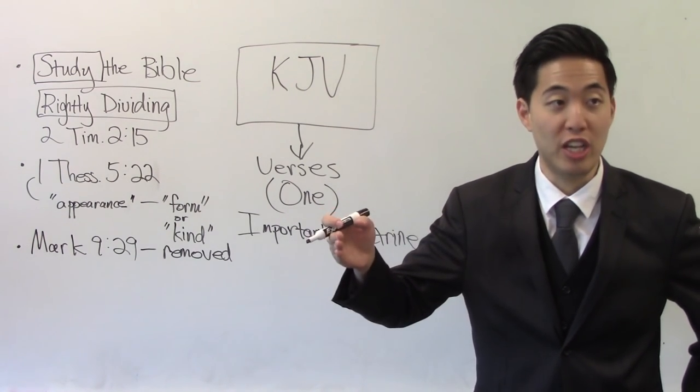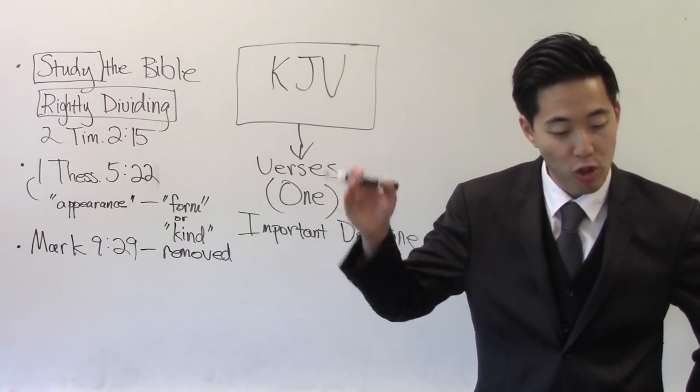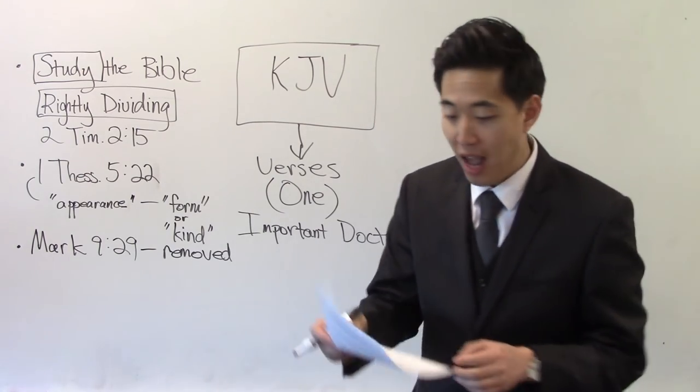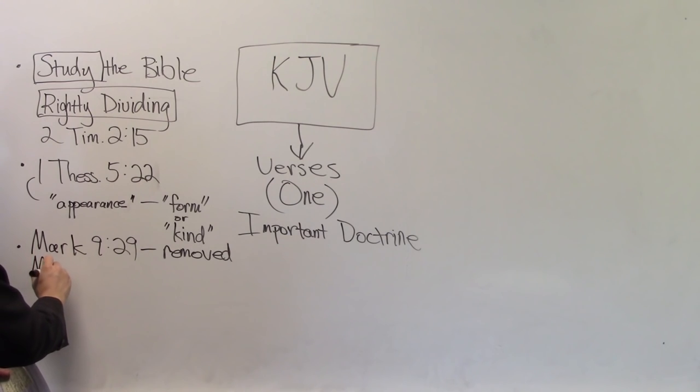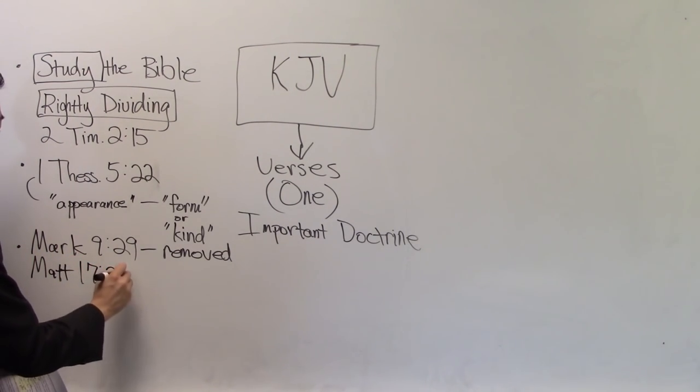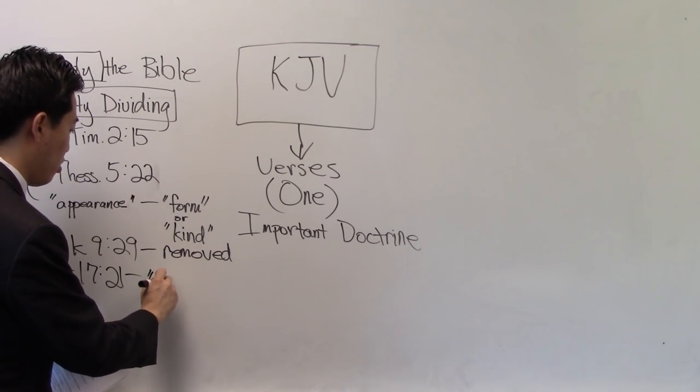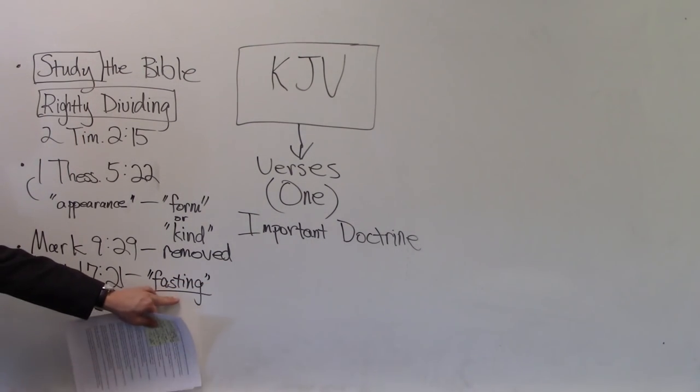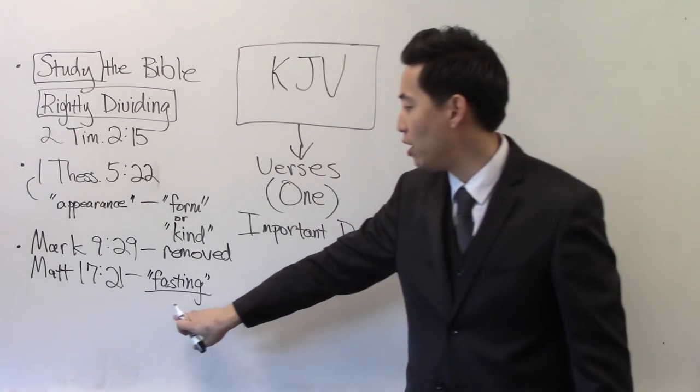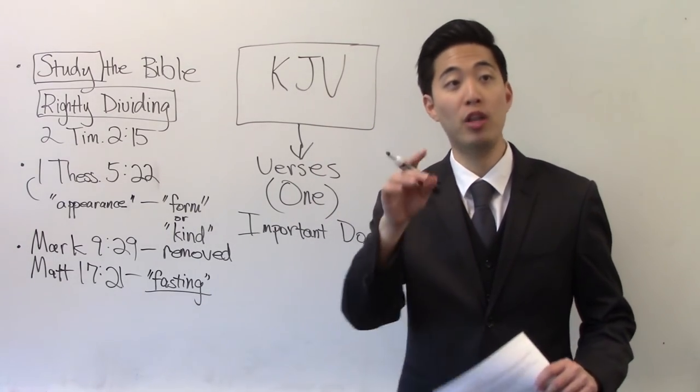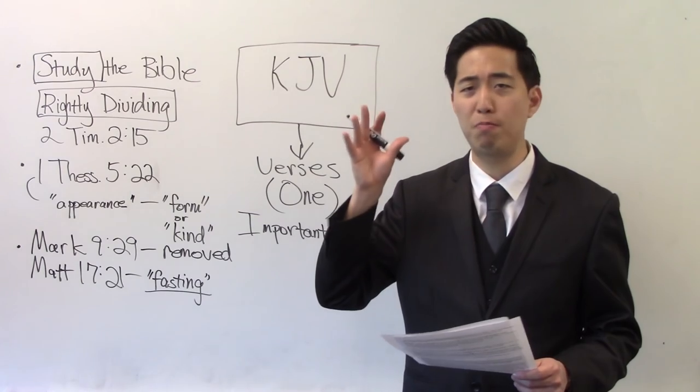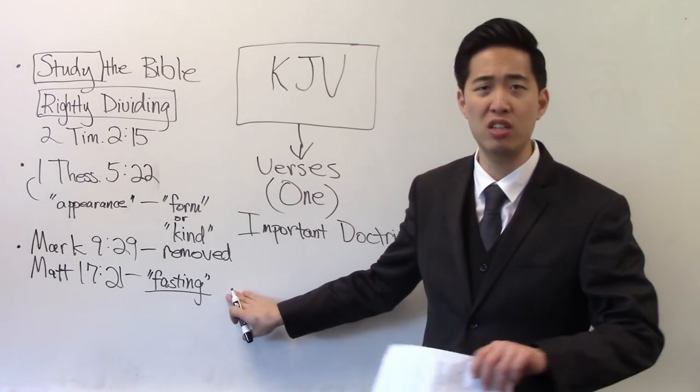Mark 9:29. And he said unto them this kind, this particular demon because it's so strong, can come forth by nothing but by what? Prayer and fasting. You have to fast and pray. Now, Matthew 17:21 is the same thing. Repeating the same thing. But we have it in Matthew 17:21. No, you remove fasting. You can pray all you want but if you want to get really desperate, this is so powerful. Fasting and prayer is so powerful, folks. I can't stress that enough. Especially, it's not just flesh but even demonic attacks. This is so important. The only verse against demonic attacks. Could that probably explain why some of these modern translators could be so demonically oppressed or possessed? Maybe that would make more sense?